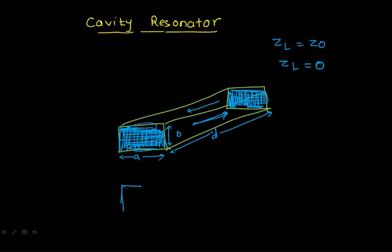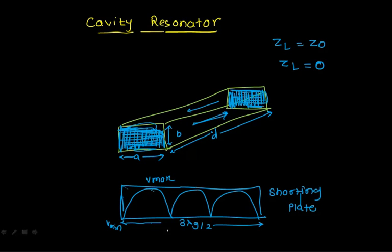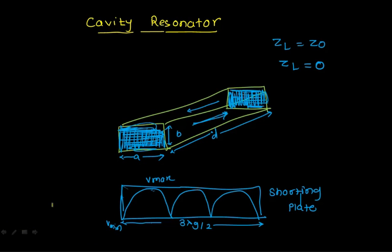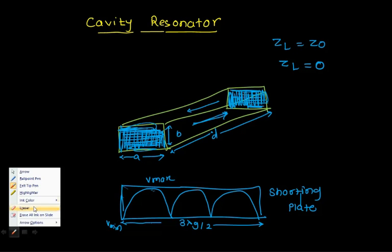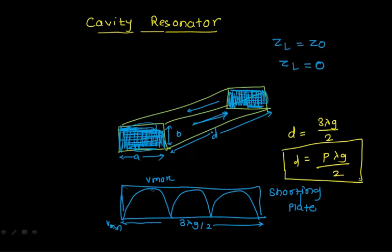Looking at the cross-section of this cavity resonator, I have standing waves — one, two, and three. The condition is: this is λg/2, this is λg/2, so this will be 3λg/2. Resonance occurs only under this condition. The distance must be a multiple of λg/2. So you put p·λg/2 where p must be any integer. That's the condition for resonance.